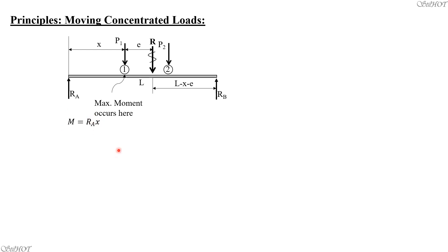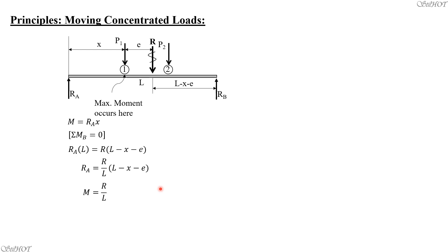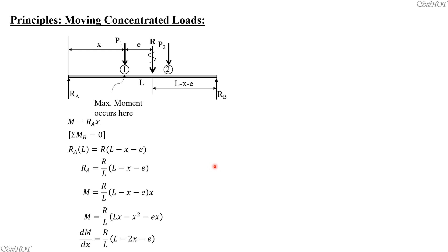This is the working equation for moment, which we will maximize. Taking summation of moments at D equals zero: RA times L equals R times (L minus X minus E), so RA equals R over L times (L minus X minus E). Therefore maximum moment M equals R over L times (LX minus X squared minus EX). Differentiating M with respect to X gives R over L times (L minus 2X minus E). Setting this equal to zero, since slope must be zero for maximum moment.